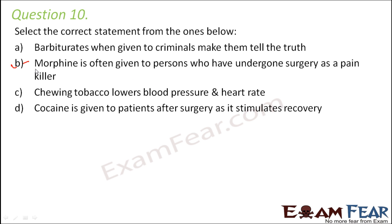So option B is the right one. Since the first option mentions drugs that make criminals tell the truth, some truth serum drugs are ethanol, scopolamine, and ammobarbital. These are some examples of truth serum drugs.